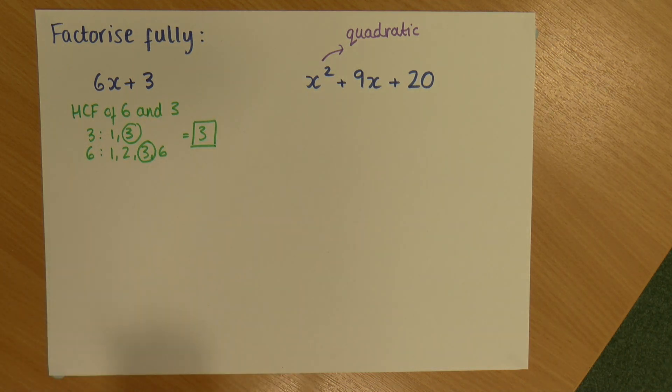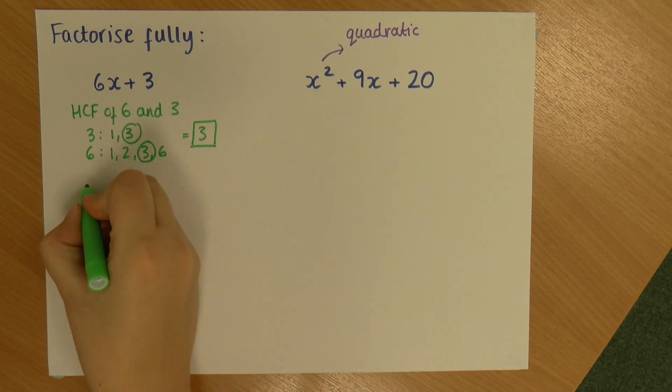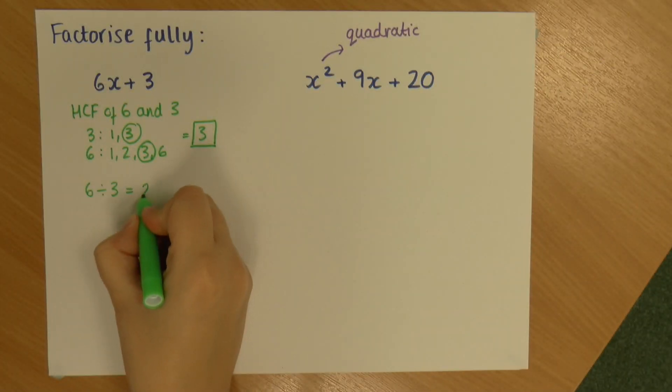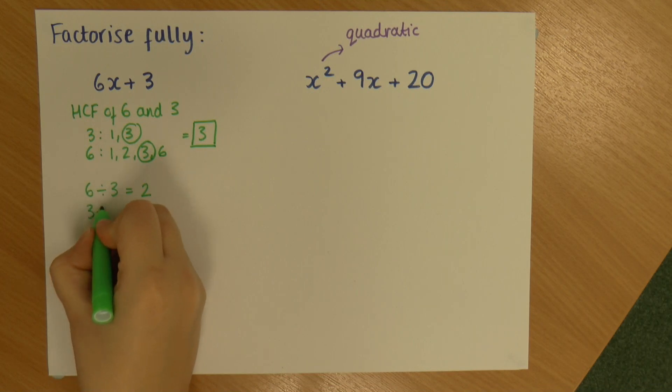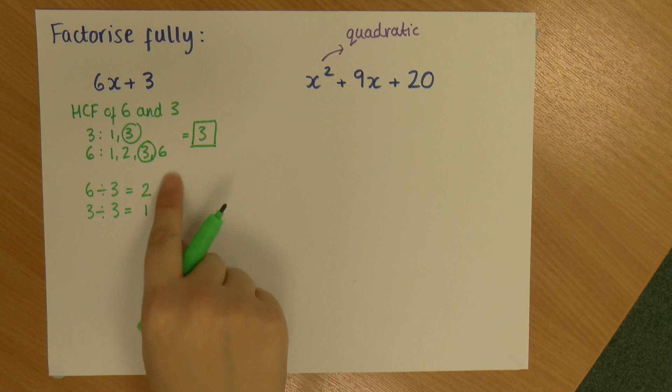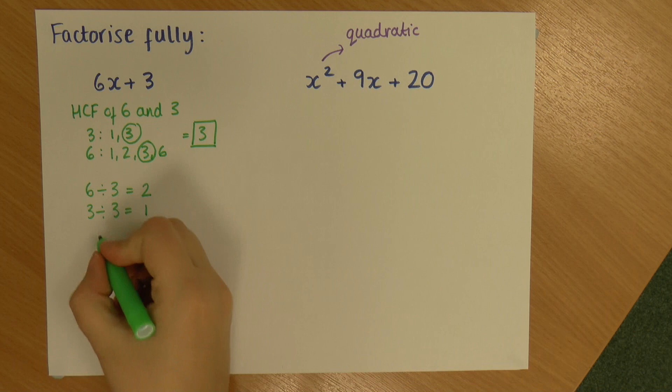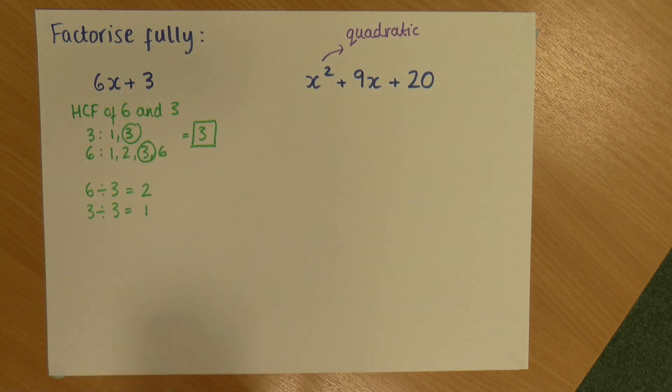However, before I do, I'm going to take both of these numbers and divide them by the highest common factor. So I'm going to do 6 divided by 3 which is 2, and 3 divided by 3 which is 1. So now I'm going to construct my answer from this. So when I factorise, I'm putting brackets in. It's the opposite of multiplying out essentially. So I'm going to give myself a pair of brackets.